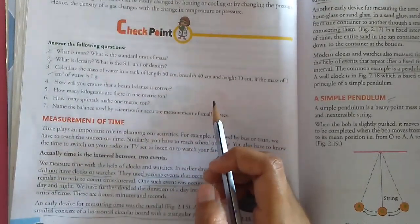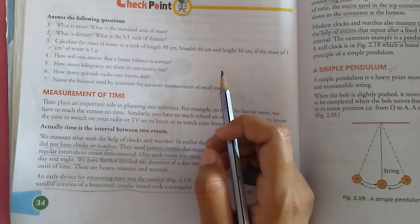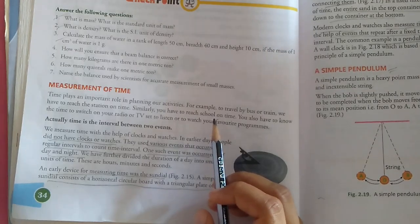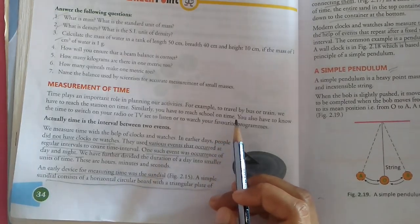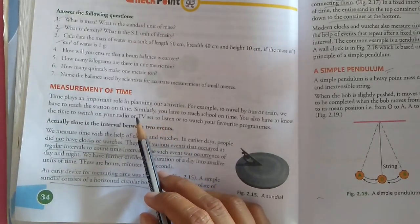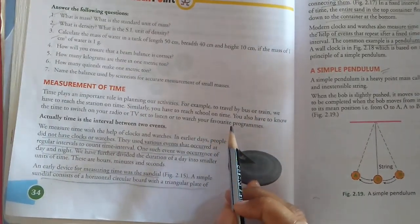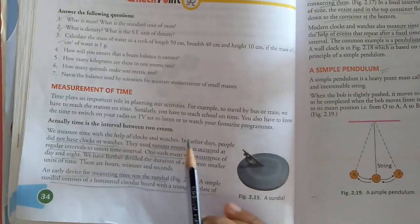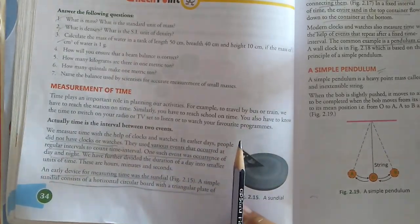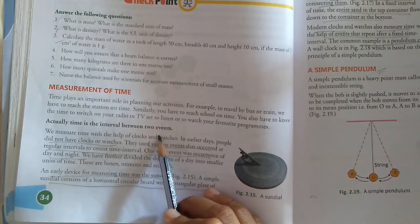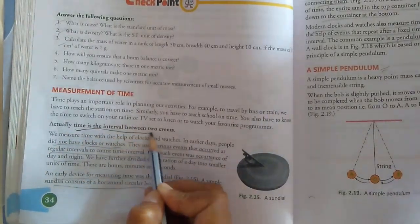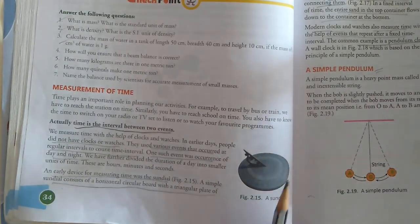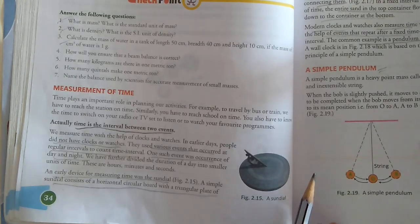Next is measurement of time. Time plays an important role in planning our activities. For example, to travel by bus or train we have to reach the station on time. Similarly, you have to reach school on time. You also have to know the time to switch your radio or TV set to listen or watch favorite programs. Actually, time is the interval between two events.